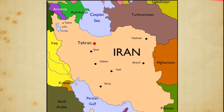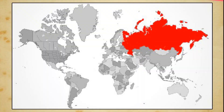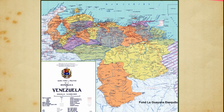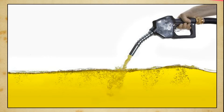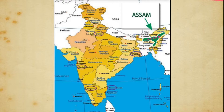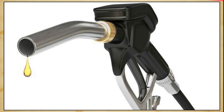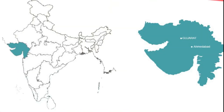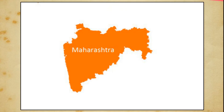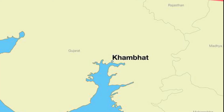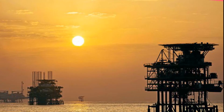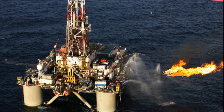The major producers are Iran, Iraq, Kuwait, Russia, USA, and Venezuela. These countries supply over 90% of the world's oil. In India, oil was first found in Assam. The oil reserves of Assam have almost depleted. Gujarat and Maharashtra are major contributors. The Gulf of Khambat and Mumbai High, an offshore area in the Arabian Sea, are major oil producers in India. Some oil is also found in the Krishna Godavari Delta area.